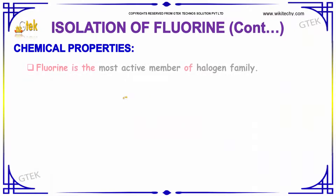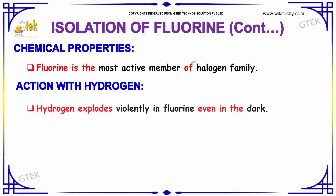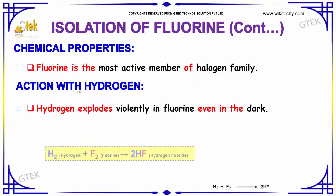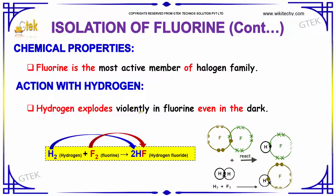Regarding the chemical properties, Fluorine is the most active member of the Halogen family. Action with Hydrogen: Fluorine reacts with Hydrogen to form Hydrogen Fluoride. Hydrogen explodes violently in Fluorine even in the dark.